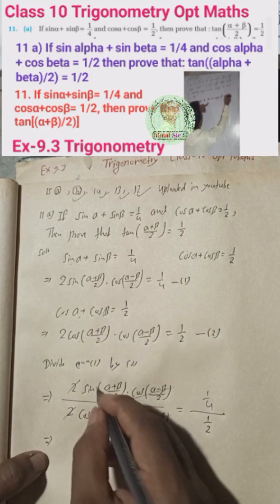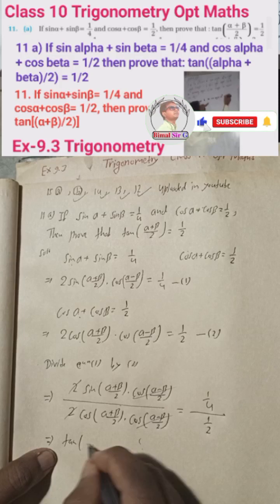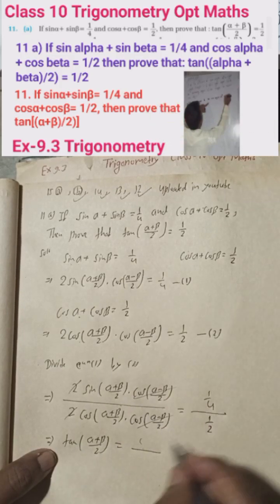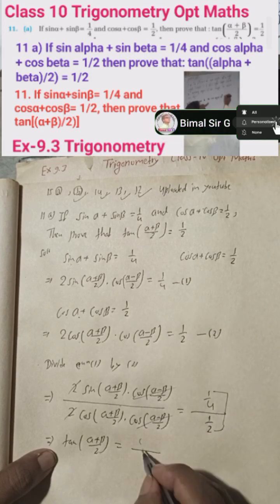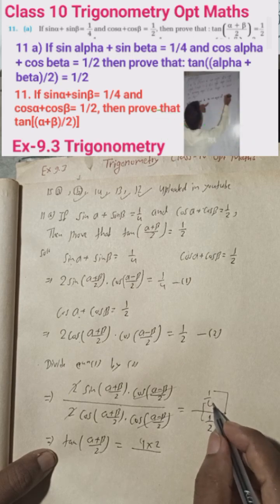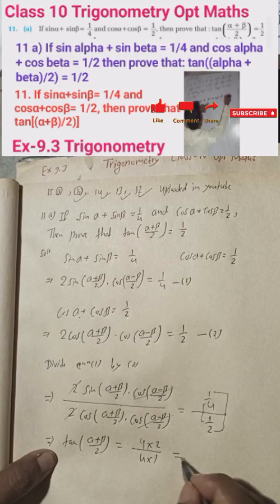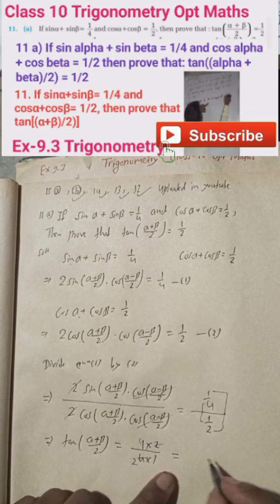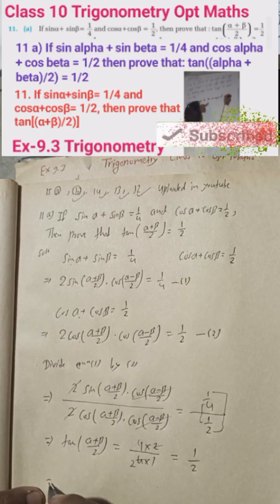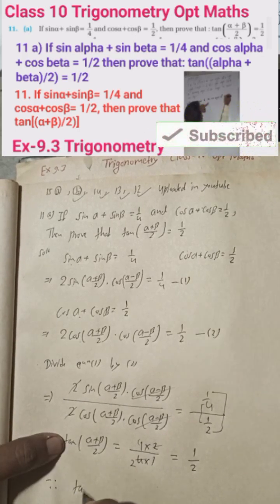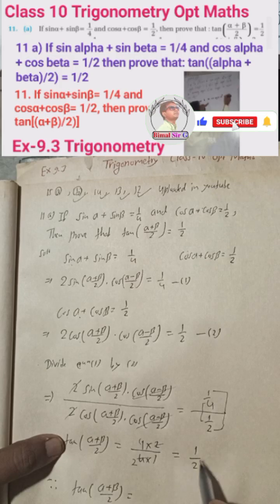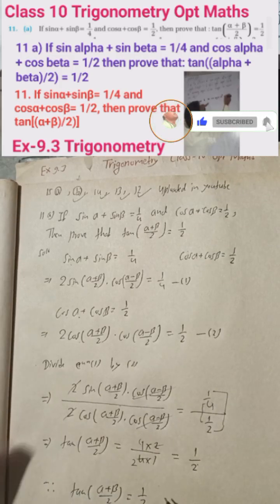This gives us tan((α+β)/2) = (1/4) ÷ (1/2) = 1/4 × 2/1 = 2/4 = 1/2. Therefore tan((α+β)/2) = 1/2, which is what we had to prove. Hence proved.